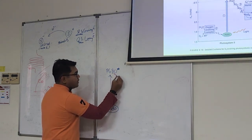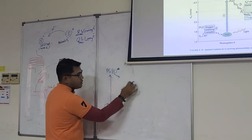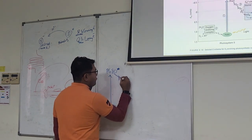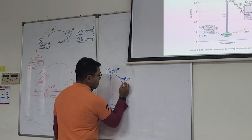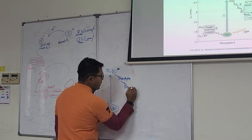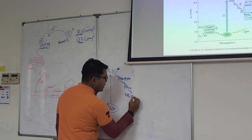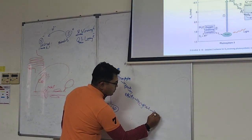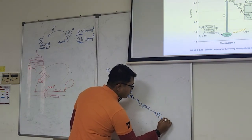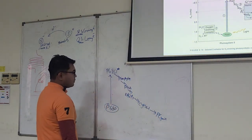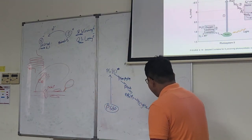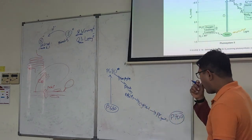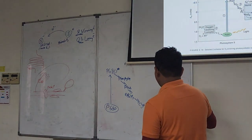So now, this will be transferred to a series of electron carriers. So you start with pheophytin. Then you start with plastoquinone A. Then you go to plastoquinone B. Then you go to cytochrome B6F. Then you go to plastocyanin. Is that correct? Then you will meet with ground state P700.